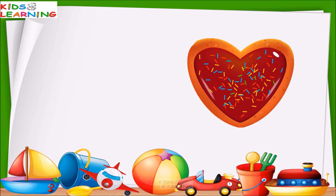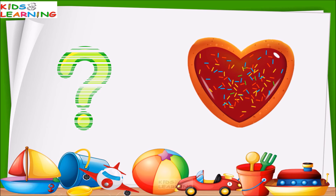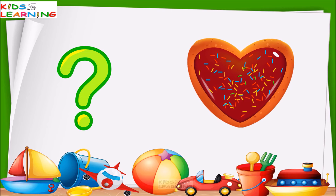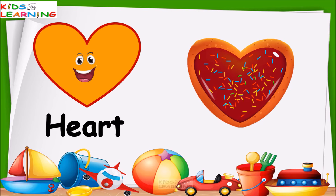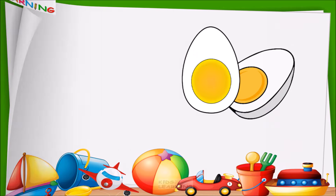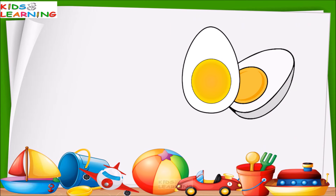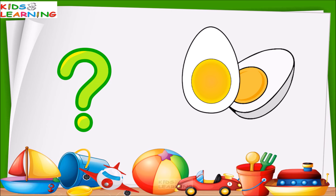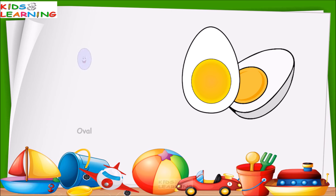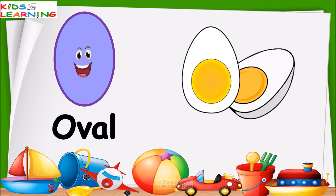This is a chocolate cookie. What is the shape of this cookie? This is a heart. Egg — what is the shape of an egg? This is an oval.